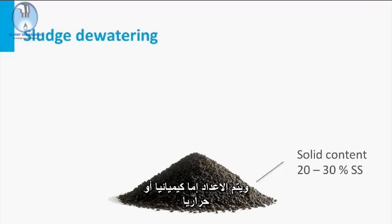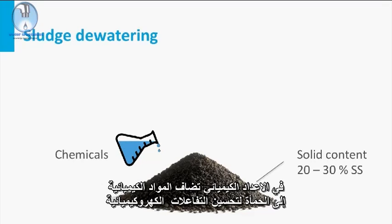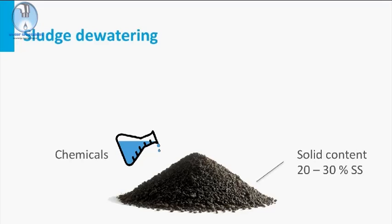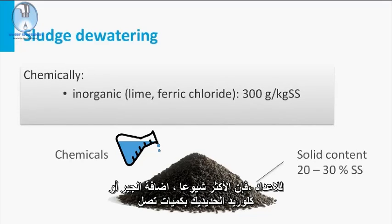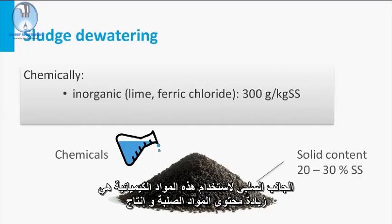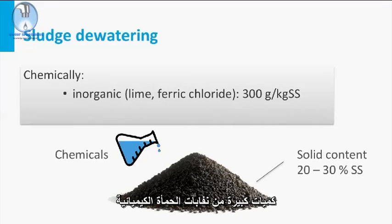Conditioning is done either chemically or thermally. In chemical conditioning, chemicals are added to the sludge to improve the electrochemical interaction between the sludge particles, creating more free water which is easy to separate. Most commonly, lime and ferric chloride is applied in an amount up to 300 grams per kilogram of suspended solids. The downside of using these chemicals is the increase in solids content and the production of large amounts of chemical sludge.